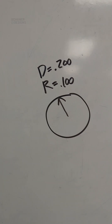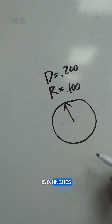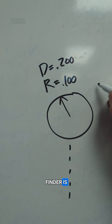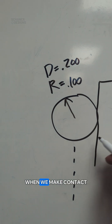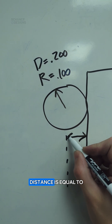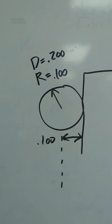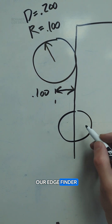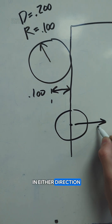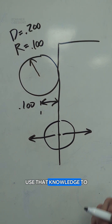Now let's do it again. So if we have an edge finder, the diameter is 0.2 inches and the radius is 0.1 inches. What we're trying to figure out is where the center line of that edge finder is relative to the edge of the part when we make contact. So if we make contact, we know that this distance is equal to the radius, which is 0.1 inches. So now we know that if we have our edge finder centered on the edge of the part, we're starting from 0 — so if we go in either direction, the absolute value of our coordinates will get bigger. We're going to use that knowledge to our advantage here.